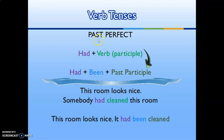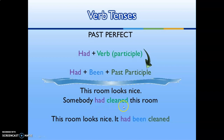For past perfect, the rule is 'had' plus verb participle (active), and 'had' plus 'been' plus past participle (passive). Example: 'Somebody had cleaned this room.' In passive: 'This room looks nice — it had been cleaned.'